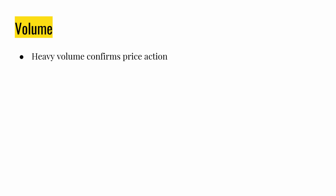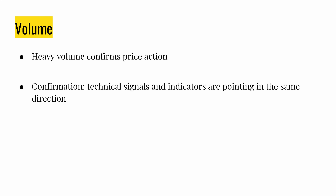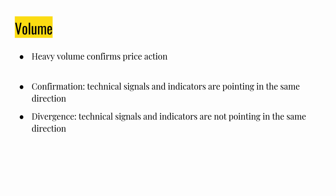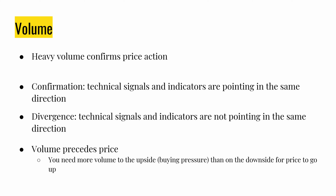Now that we've covered open interest, let's focus on volume. As covered in previous videos, volume is important in confirming price action — patterns like head and shoulders, triangles, and flags all need volume to confirm. Confirmation in technical analysis means technical signals and indicators are pointing in the same direction, signaling a strong trend. The opposite is divergence, where indicators point in different directions, signaling a weak trend. Furthermore, most traders believe volume usually precedes price — you need more buying volume than selling volume to push the price upward.